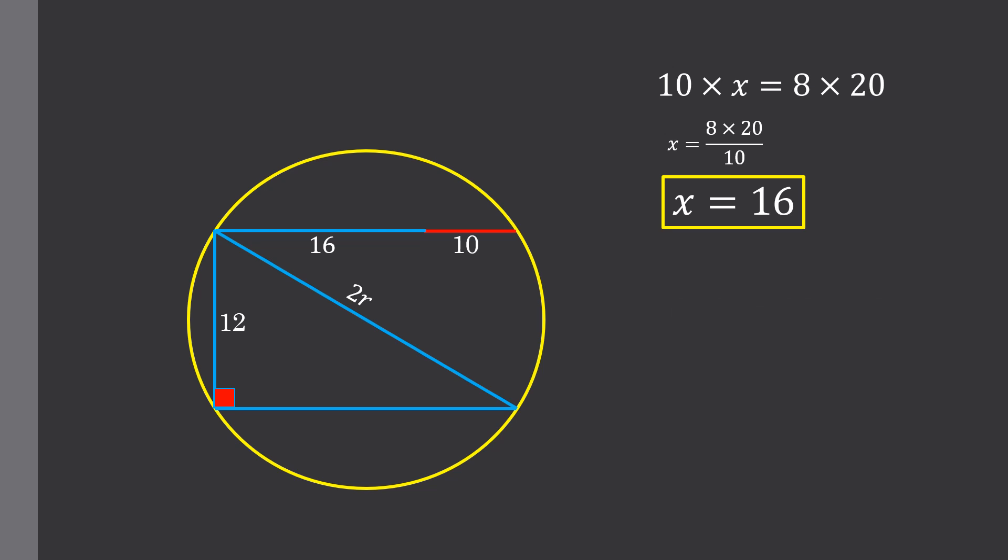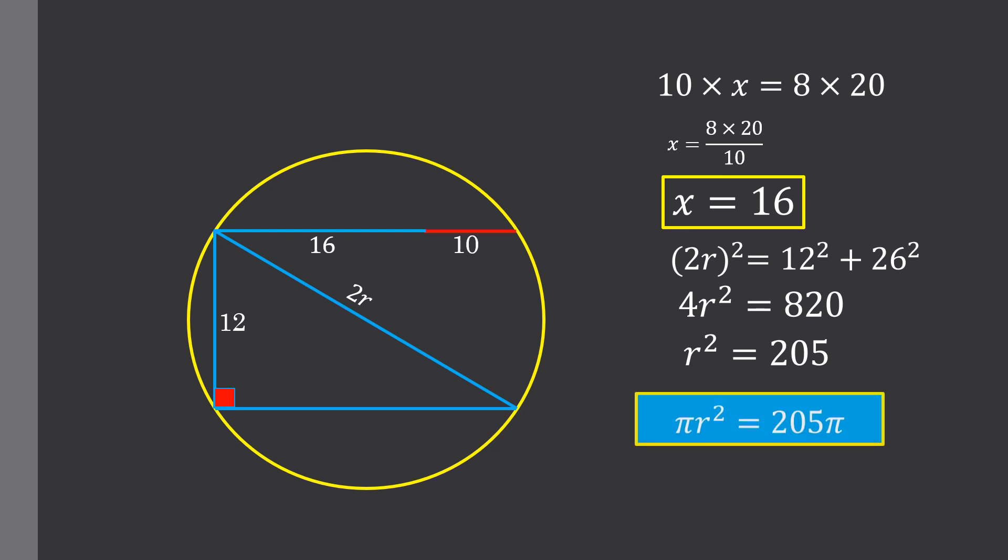Using Pythagorean theorem, we have (2r)² is equal to 12² plus 26². From here, 4r² is equal to 820. If we multiply both sides by π, then πr² is equal to 205π, which is equal to the area of this circle.